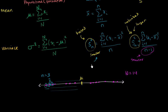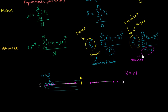So this biased estimate is an underestimate. It turns out that if you divide by n minus 1 instead of n, you get a slightly larger sample variance, and this is an unbiased estimate. In a future video, I'd like to generate a computer program that more convincingly demonstrates that dividing by n minus 1 gives a better estimate of the population variance.